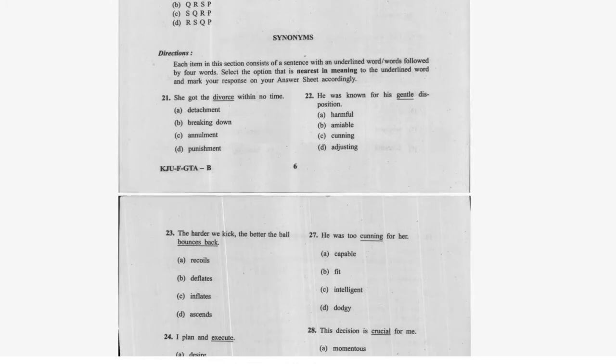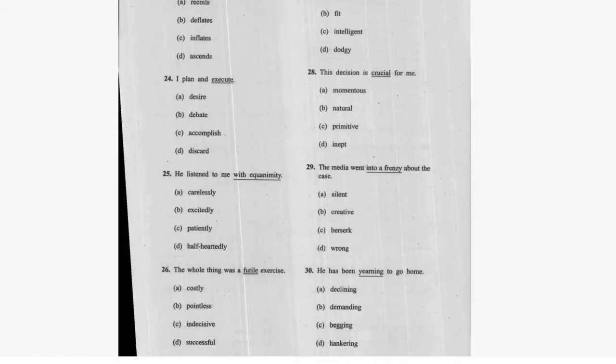Now moving on to synonyms. The synonym of 'divorce' is annulment. The synonym of 'gentle' is amiable. The synonym of 'bounce back' is recoil. The synonym of 'execute' is accomplish. The synonym of 'equanimity' is patiently.